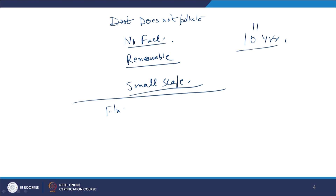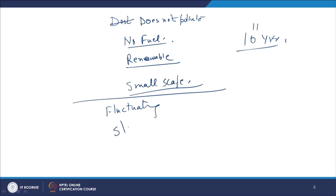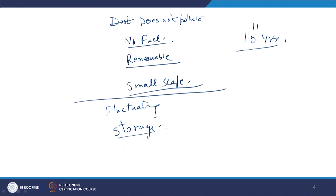The major drawback of wind energy is fluctuation — the wind velocity does not remain constant, so power output keeps fluctuating. A storage device is needed, in the form of a battery or some other device for storing energy. Also, because wind involves a gaseous fluid, it creates considerable noise — so noise pollution is also a concern when you go near windmills.